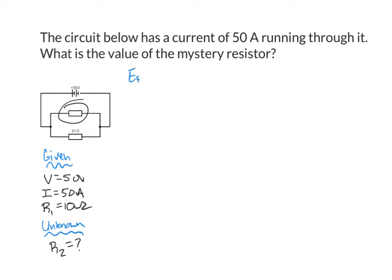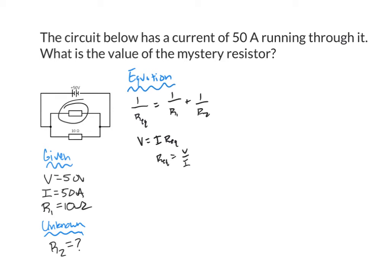So let's go to the equation step. I know that 1 over REQ is equal to 1 over R1 plus 1 over R2, because that's the only equation that has my unknown in it. However, to solve this equation I need to first find REQ, so I'm going to use Ohm's Law: V is equal to I times REQ, or REQ is equal to V over I. I'll plug that value for REQ into my first equation to find my mystery resistor.